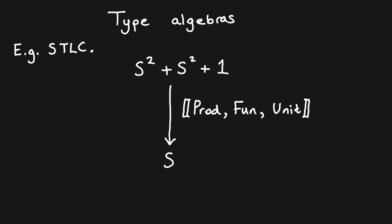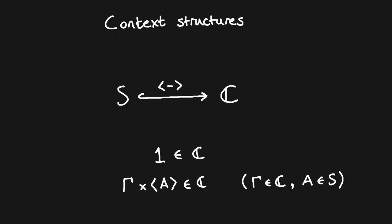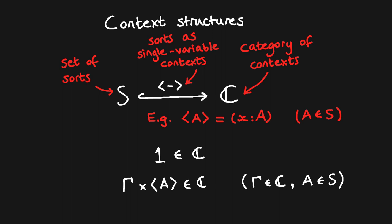Here's an example of the algebraic structure for the types of the simply typed lambda calculus: the set of sorts S is closed under forming product types, function types, and the unit type. Next, let's look at the structure of variable contexts. A context structure is given by a small category C whose objects represent contexts and whose morphisms represent variable renamings. The canonical examples of variable renamings are the structural operations of exchange, weakening, and contraction, which are going to be present in every simple type theory. The set of sorts S embeds into the category of contexts C as single-variable contexts — for instance, if we have a type A in S, then A embeds into C as a singleton context x of type A.